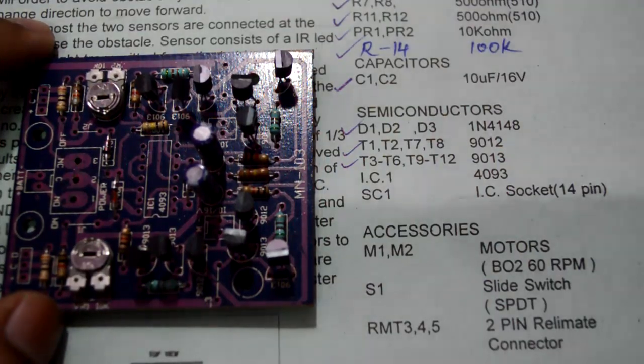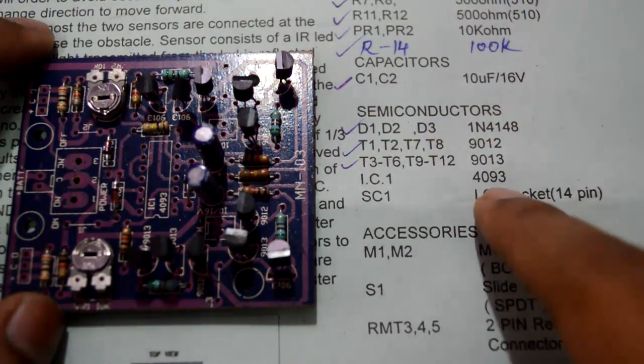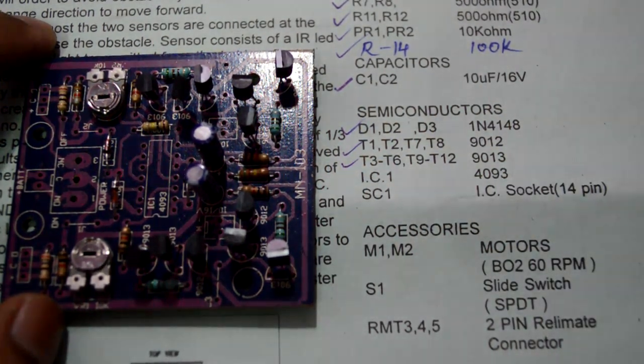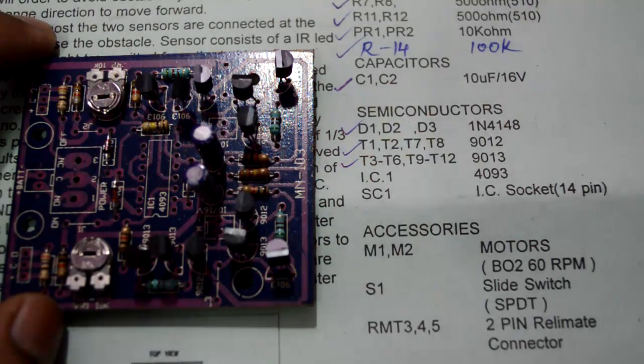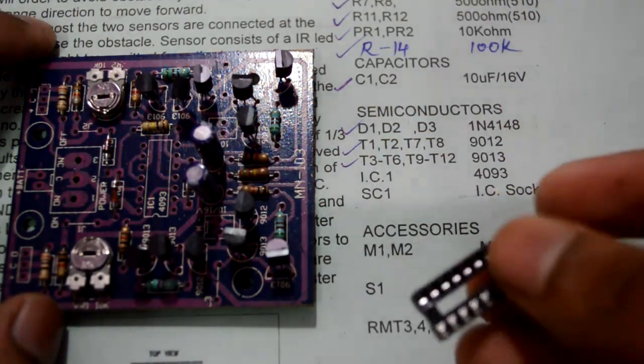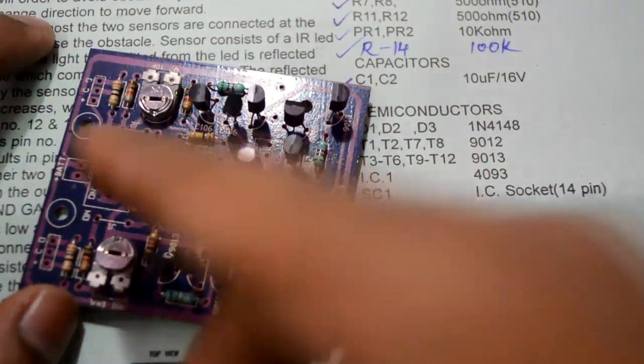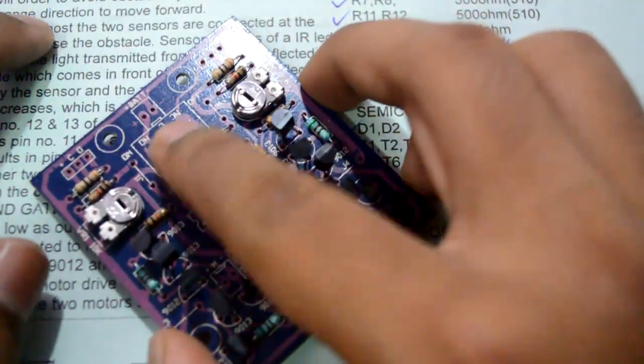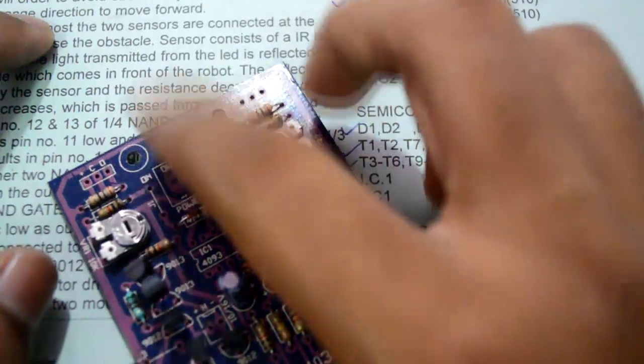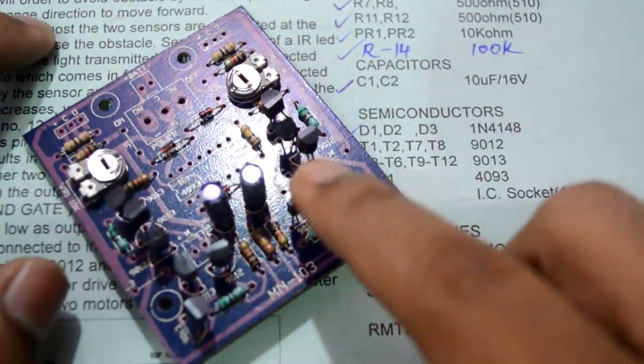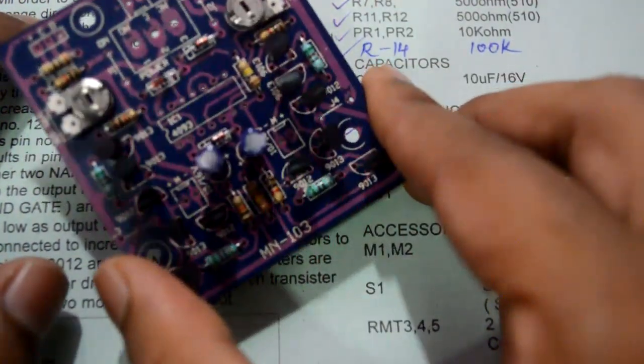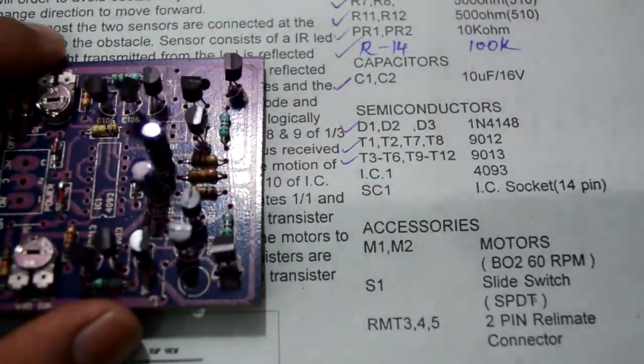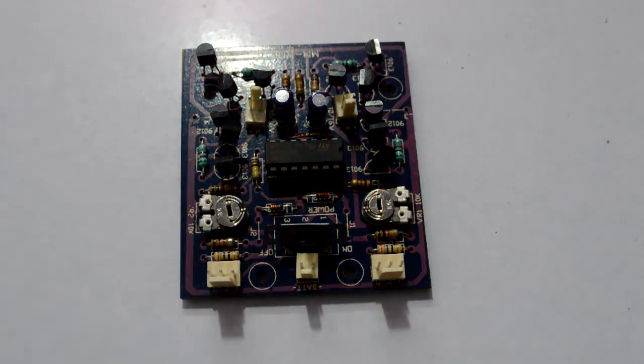We have done with the transistors. The next thing on our list is IC4093, which is quad NAND gate IC. Make sure you are not soldering the IC, instead you are soldering the IC socket which goes right over here. After that we will be soldering the switch, the battery terminals, the sensor terminals and the motor terminals which go here and here.